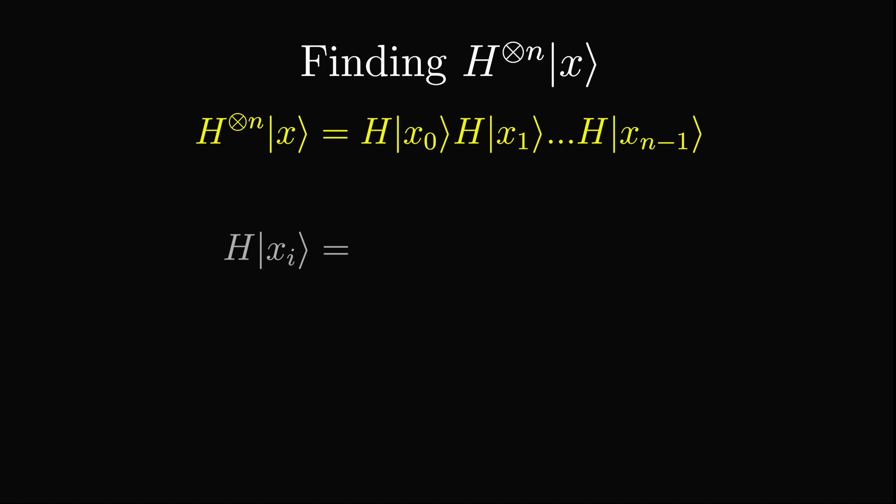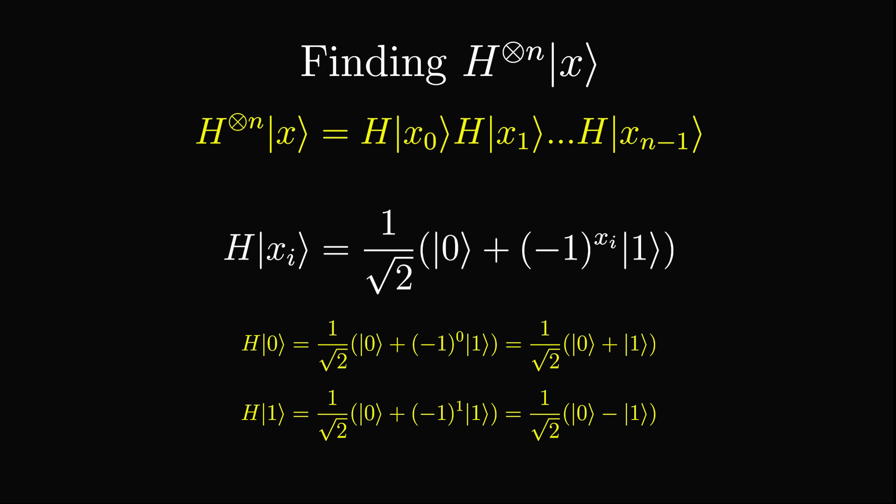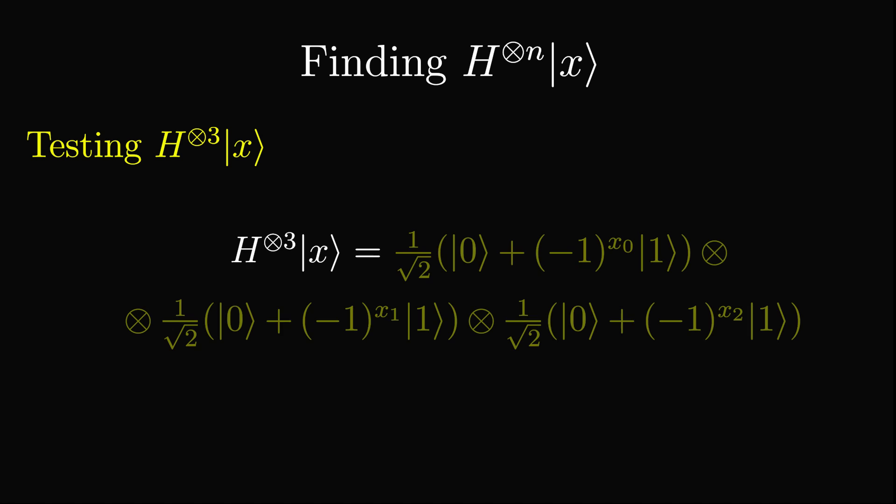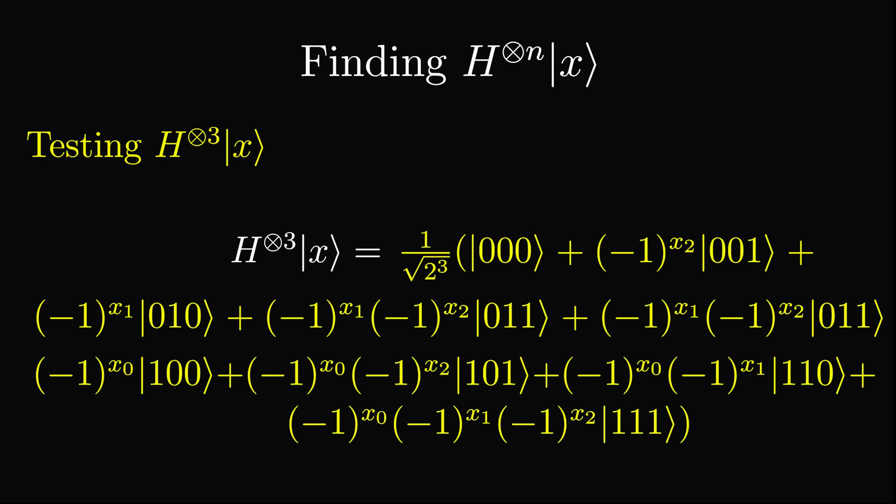To find out how we can write this transformation, let's rewrite the Hadamard transform on an arbitrary bit xi as 1 over root 2, 0 plus negative 1 to the power of xi, 1. Since if xi equals 0, then it becomes 1 over root 2, 0 plus 1, and if xi equals 1, then it becomes 1 over root 2, 0 minus 1.